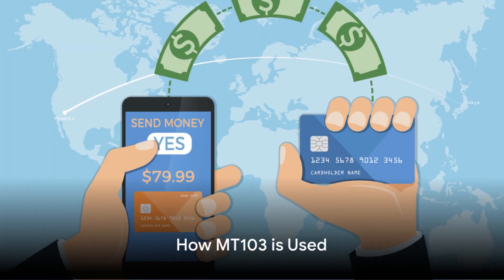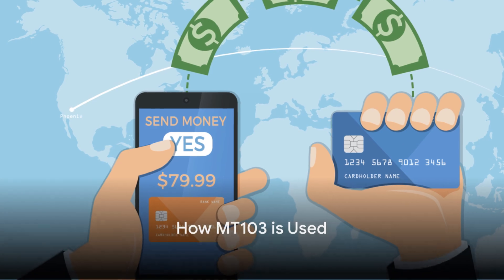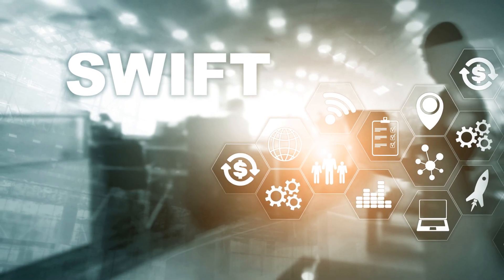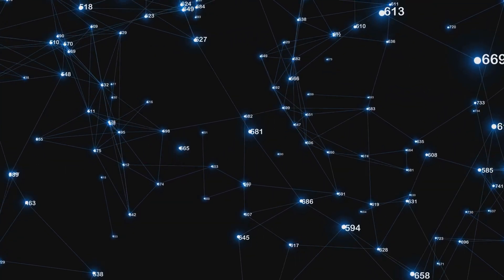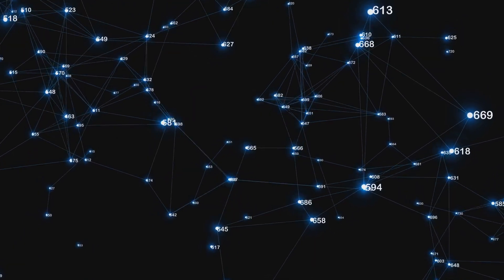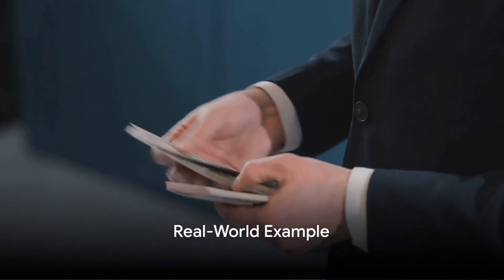When you ask your bank to send money internationally, they use an MT-103 message to communicate with the recipient's bank. This message originates from the bank sending the money. They create this message and send it through the SWIFT network to the recipient's bank.